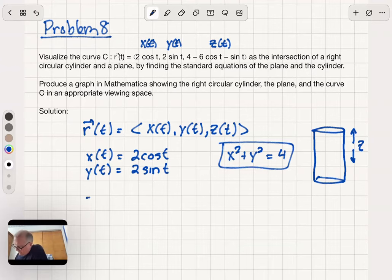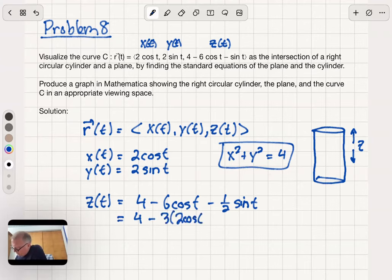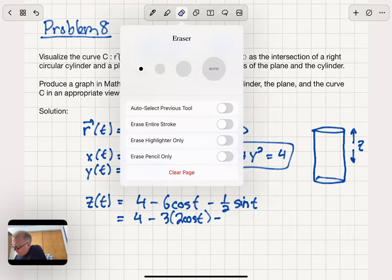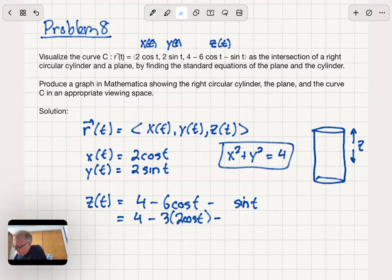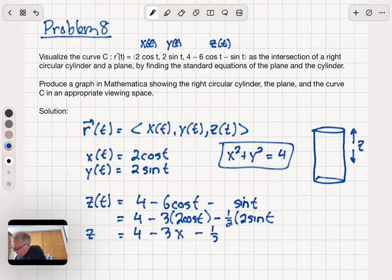If I look at the z-coordinate and say z of t is 4 minus 6 cos t minus sine t, I can use the sine and cosine. I can use the x and y values to rewrite this as 4 minus 3 times 2 cosine t. Oh, I apologize, this is not a minus 1 half here. This is minus sine t. I've got a few typos that are going to creep in. But I can think of that minus sine t as minus 1 half 2 sine t. So what I've done is expressed z as 4 minus 3 times x, 2 cos t is x, minus 1 half times y.